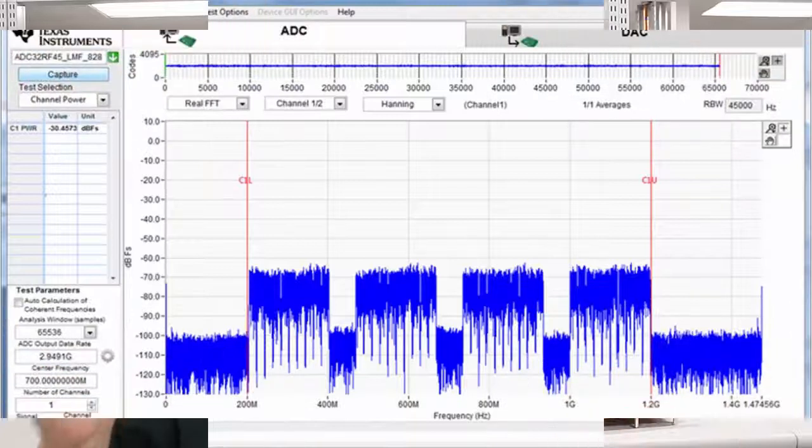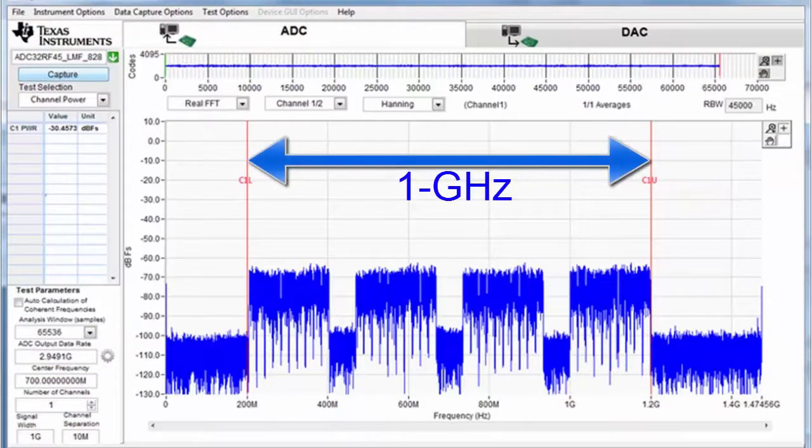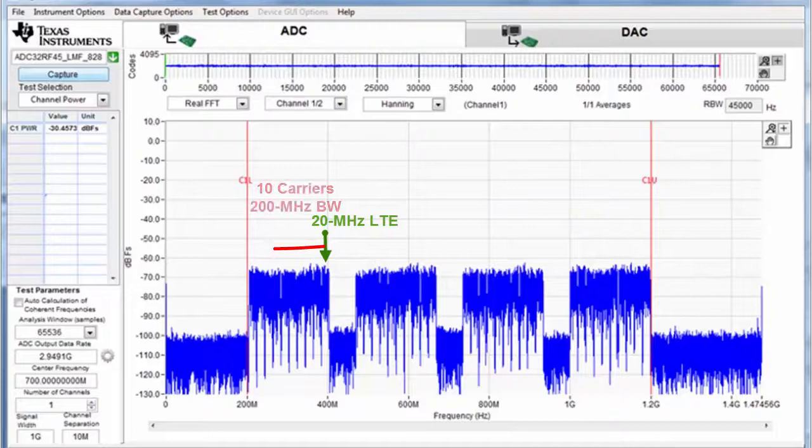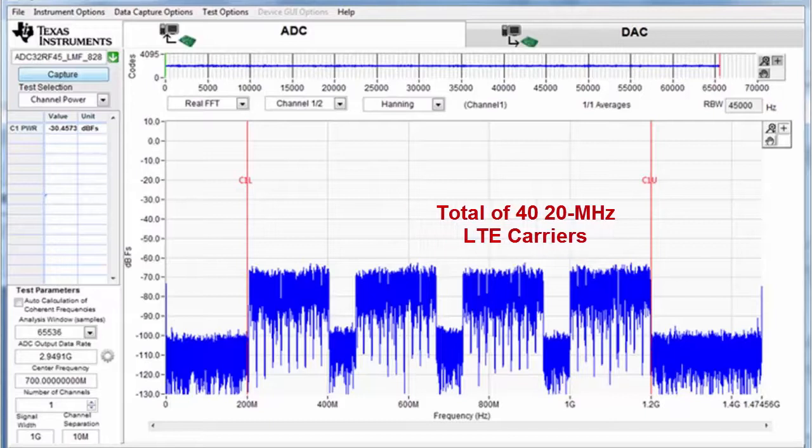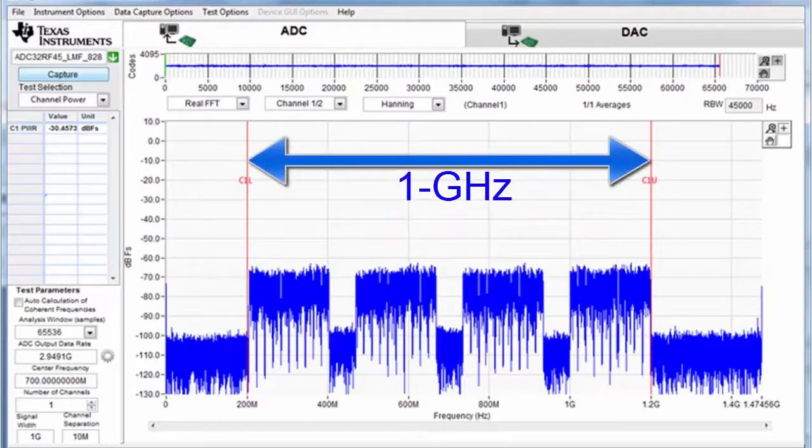Now let me show you an example of the kind of signals that we can support with this device. Here's a case where I'm using a signal that's 1 GHz wide. It's comprised of these 4 groupings. And each grouping has 10 20 MHz wide LTE carriers. Each grouping is separated by approximately 65 MHz. So, if you put it all together, we've got 40 carriers of 20 MHz LTE signals, and it comprises a total of 1 GHz of bandwidth.